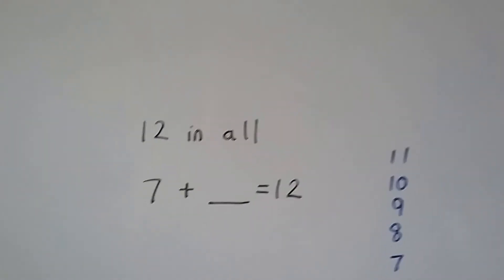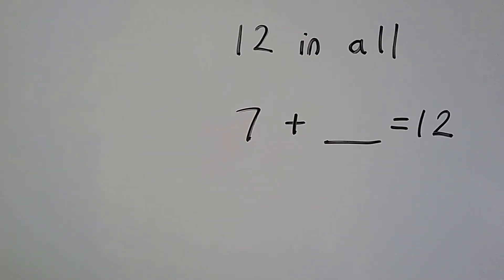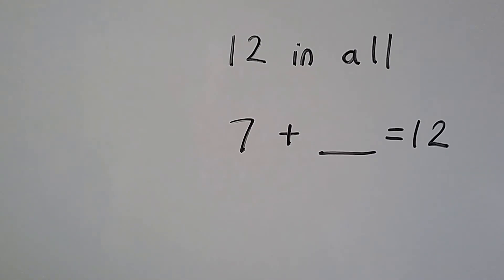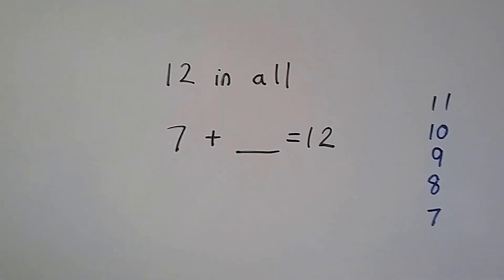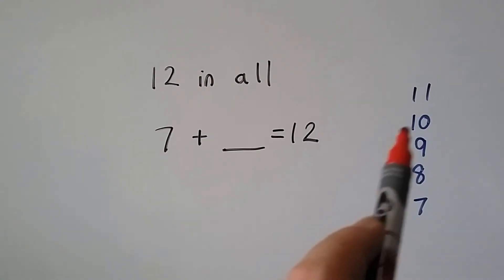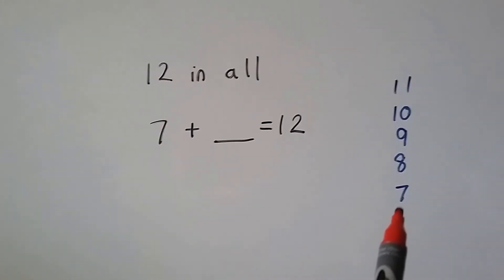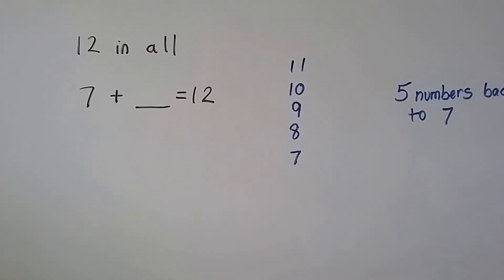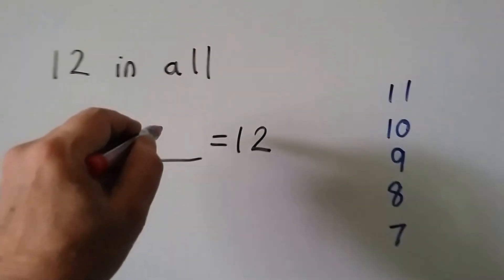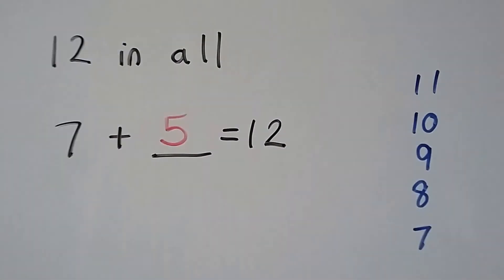Let's try this one. There's 12. So from 12, we're going to say 11, 10, 9, 8, 7. And it took us 5 numbers to get back to 7. So it's 7 plus 5. See?